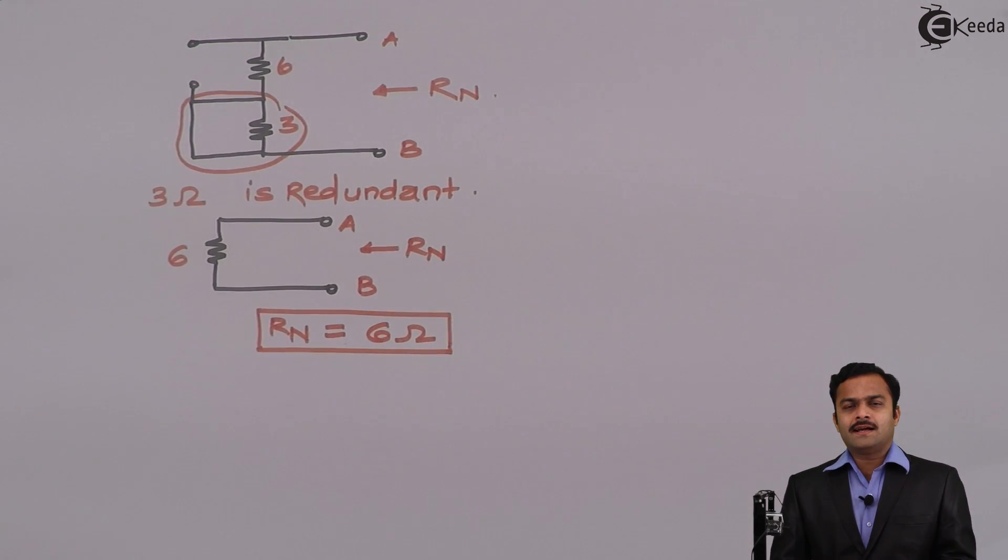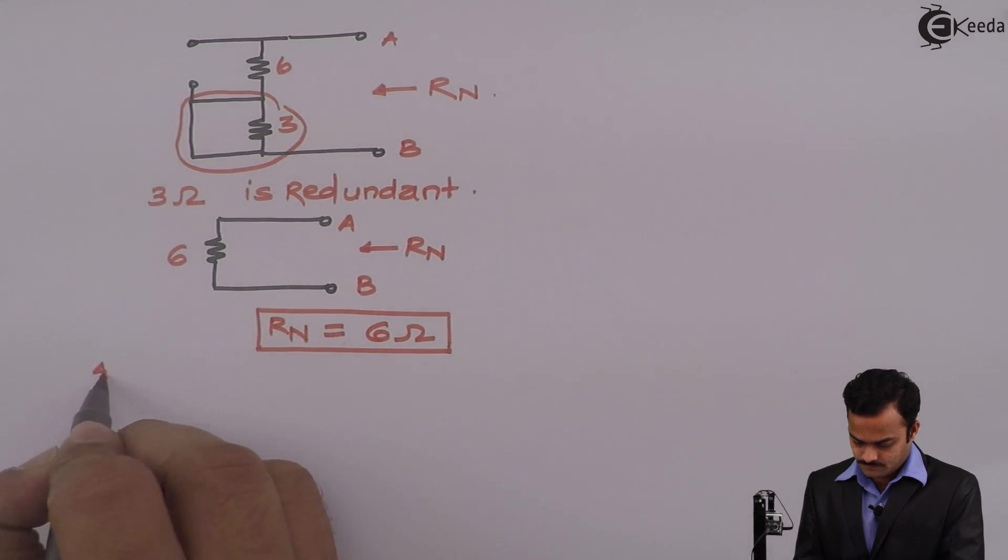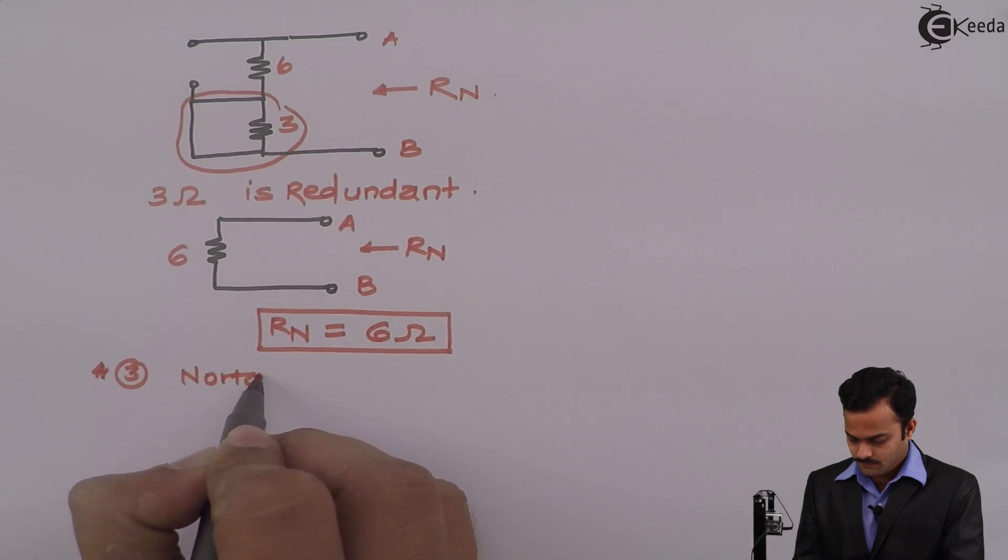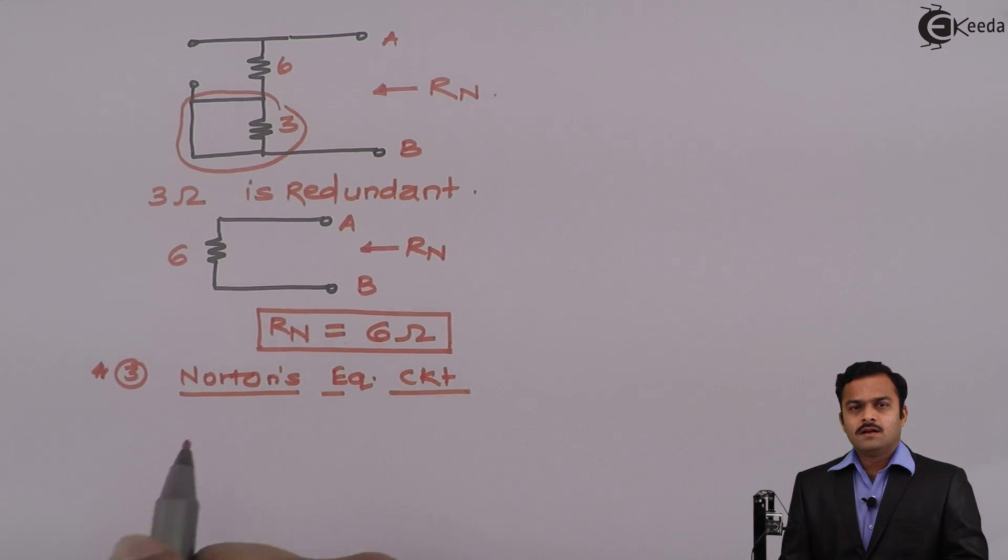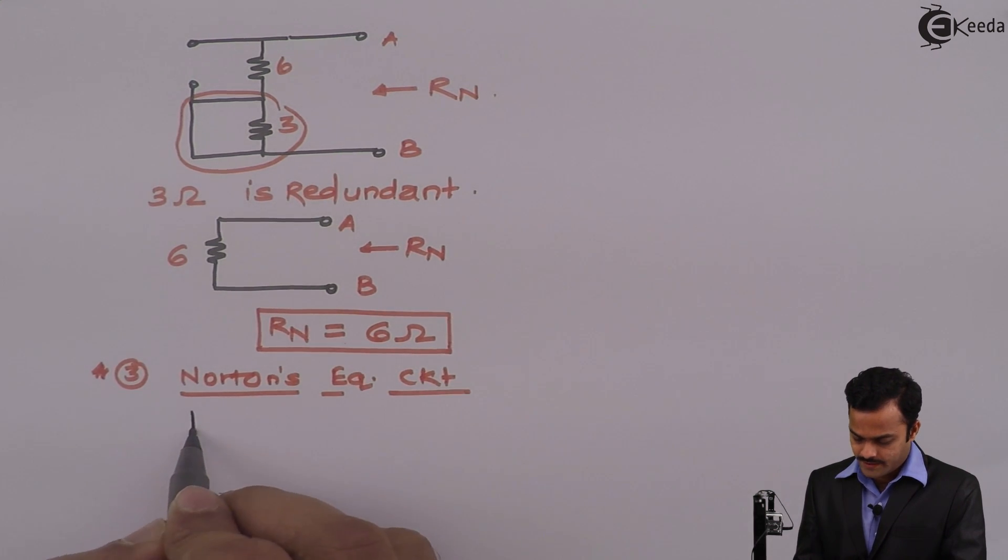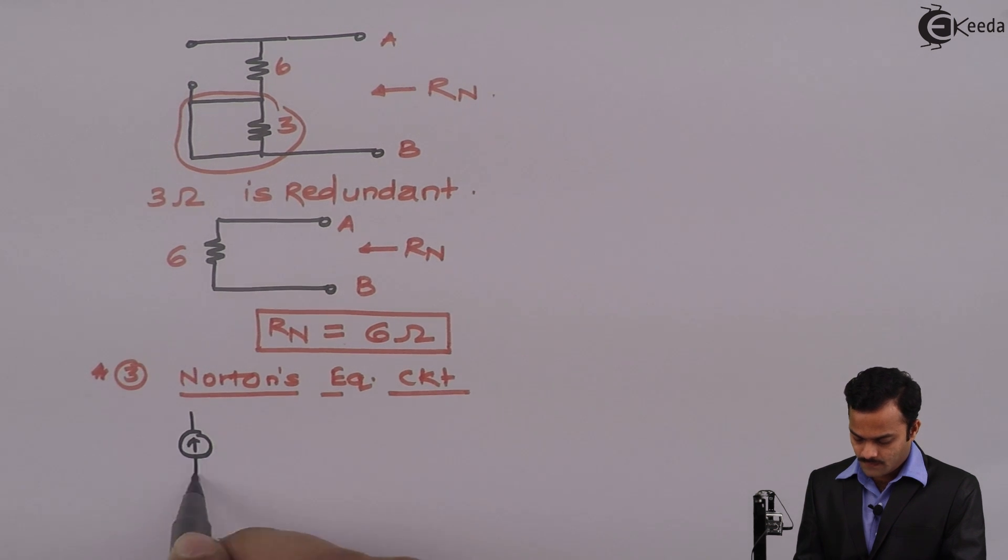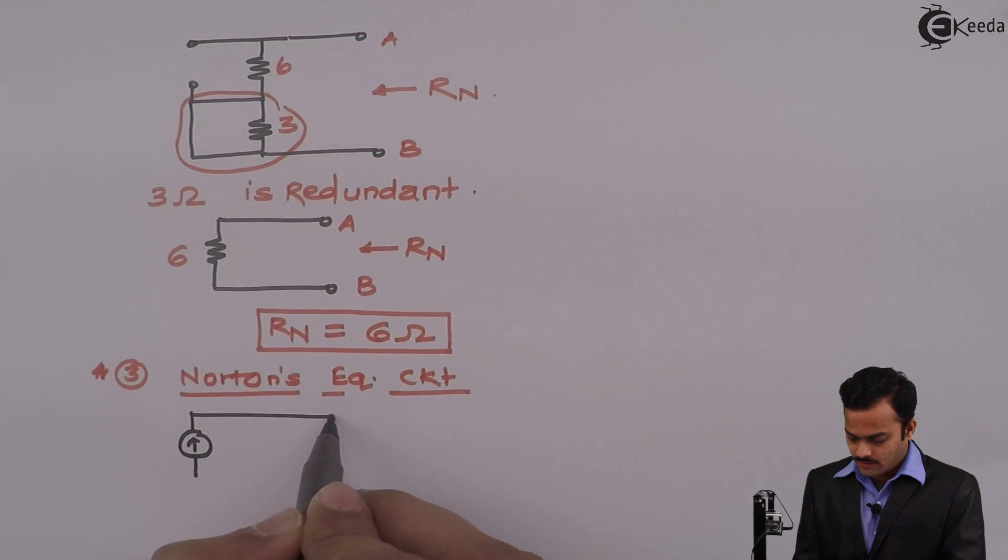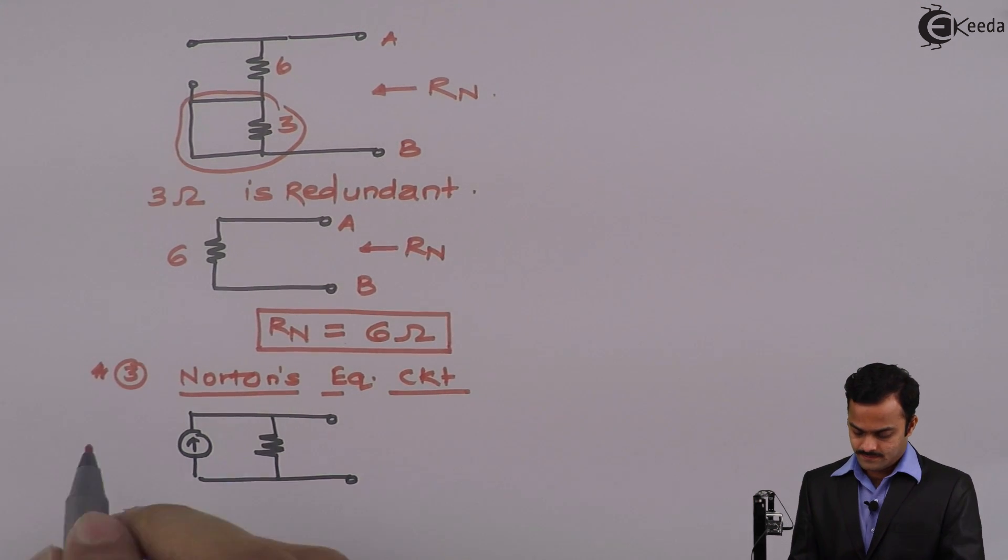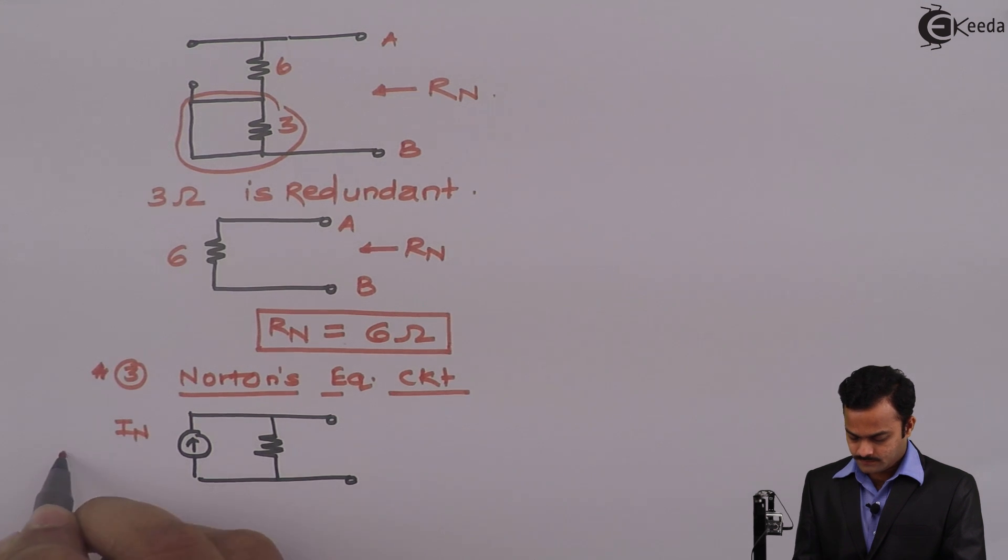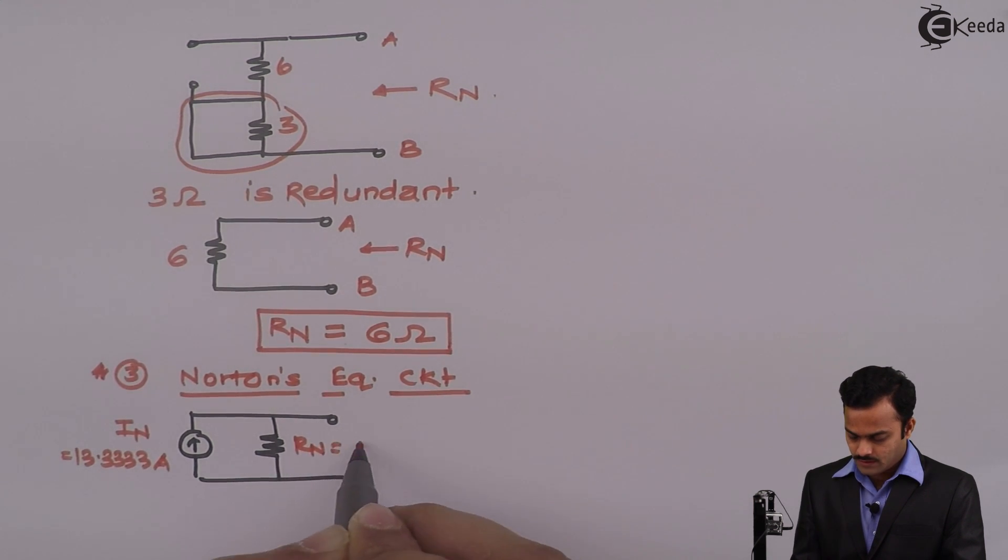So across these two points Rn we will get at 6 ohm. Now the third and last step is Norton's equivalent circuit. Here I will have a current source of a value In and parallel to it I will have a resistance called as Rn.